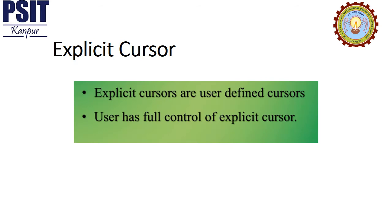The next type is the explicit cursor. Explicit cursors in Oracle Database are in contrast to implicit cursors. Explicit cursors are user-defined cursors, which means the user has to create these cursors for any statement which returns more than one row of data. Unlike implicit cursors, the user has full control of explicit cursors.